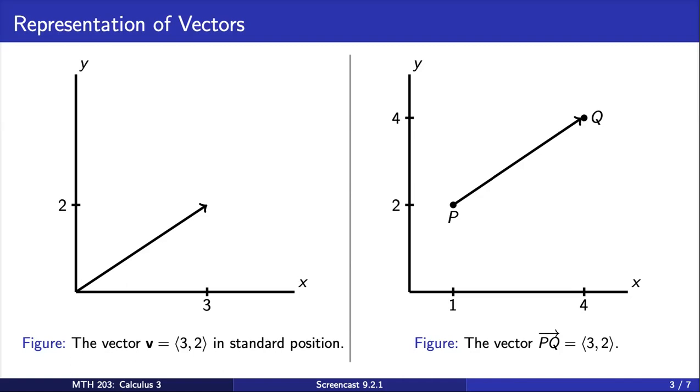This vector is drawn in standard position, which means the tail of the vector is placed at the origin. Here, we've named this vector v, and you'll notice we use boldface letters to represent vectors. We also use pointed brackets for vectors to distinguish them from points.